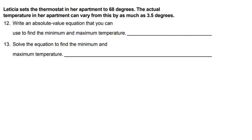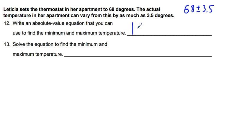The last problem: Leticia sets her thermostat to 68 degrees, and the actual temperature can vary by as much as 3.5 degrees. We want to find the maximum and minimum temperature. The common-sense approach is that we can go up 3.5 degrees or down 3.5 degrees from 68. The absolute value equation we write is: absolute value of x minus 68 equals 3.5.